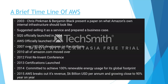Here is a brief timeline of AWS. In 2003, Chris Pinkman and Benjamin Black presented a paper on what Amazon's own internal infrastructure should look like, suggesting selling it as a service. They launched their first official service, SQS, in 2004. In 2006, Amazon officially launched AWS. In 2007 — just one year after official launch — AWS already had around 180,000 developers on the platform. In 2010, all of Amazon.com moved completely over to AWS.